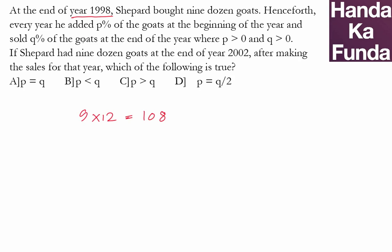Then what happened? Every year he added P percent of the goats at the beginning of the year and sold Q percent of the goats at the end of the year.